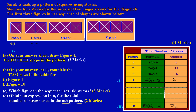In figure number two, looking at the table, there was a total of eleven straws. In figure number three, the number of straws was sixteen. And in figure number four, looking at the fourth row of the table, we have a total of twenty-one straws used.